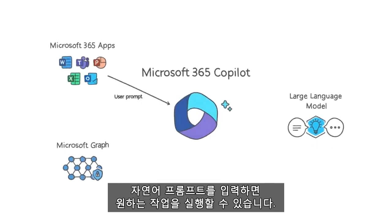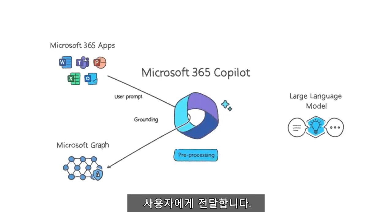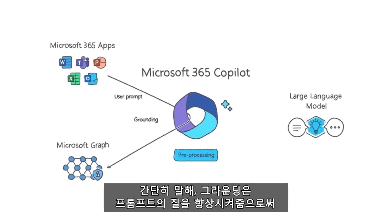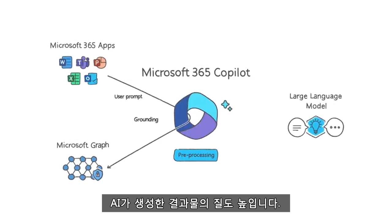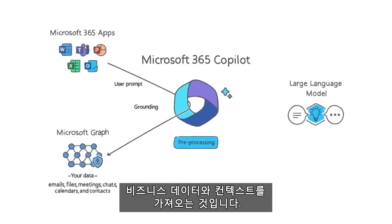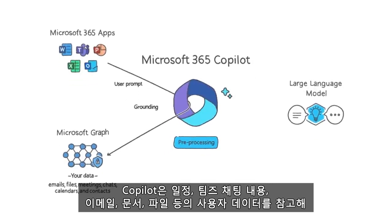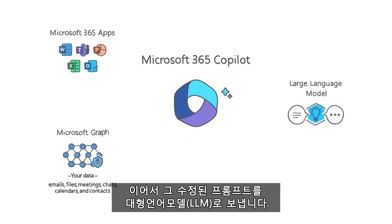It starts with a prompt from you in an app. Copilot pre-processes the prompt through an approach called grounding. Put simply, grounding improves the quality of the prompt, so you get answers that are relevant and actionable. One of the most important parts of grounding is making a call to the Microsoft Graph to retrieve your business content and context. Copilot combines this user data from the graph with other inputs to improve the prompt, and then sends that modified prompt to the LLM.